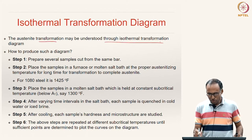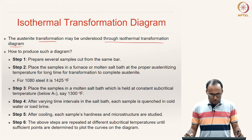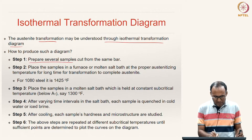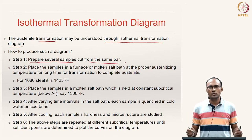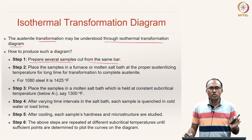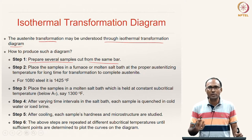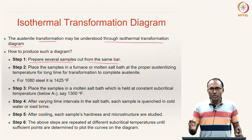The austenite transformation may be understood through the isothermal transformation diagram. To generate such a diagram, the process is straightforward although laborious. You take a plain carbon steel ingot and cut several samples from the same bar — perhaps twenty or more depending on the number of data points needed — to ensure the same initial microstructure, composition, and uniform distribution of any inclusions.